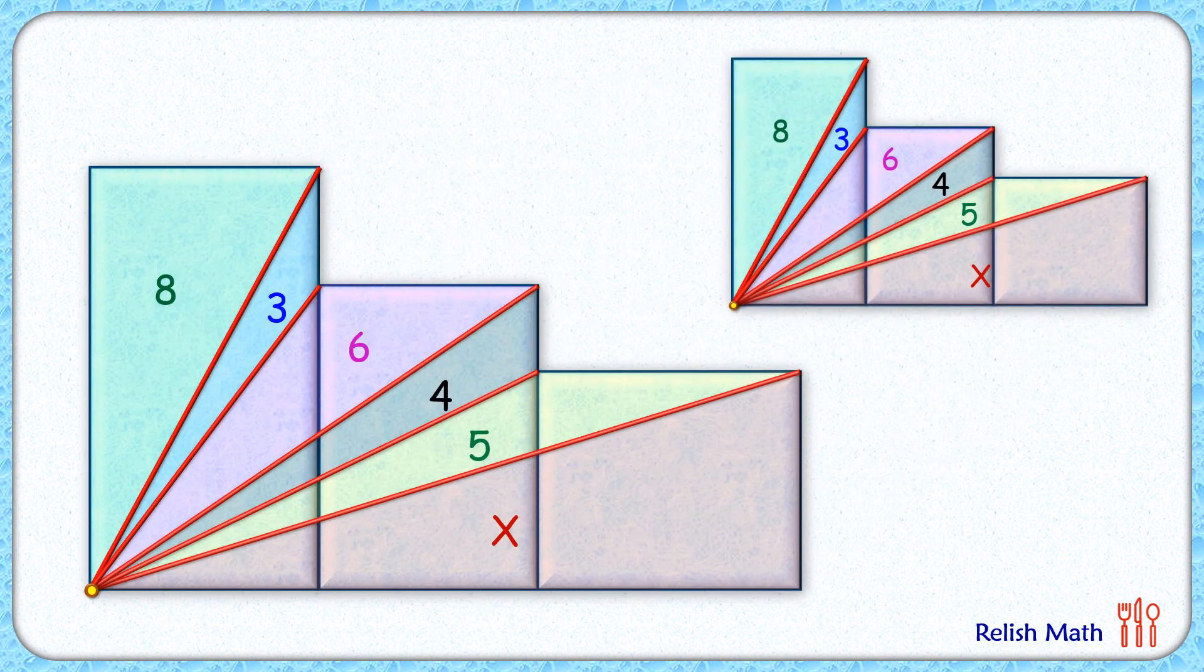To solve it further, let's remove this green triangle, pink triangle, and this yellow triangle. Now let's concentrate on the parallel lines of this rectangle.